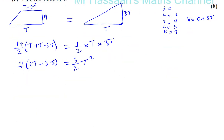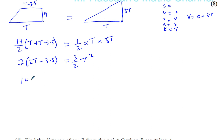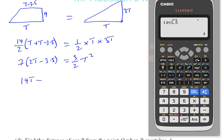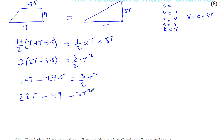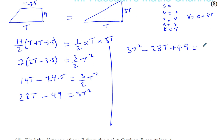So we end up with a quadratic. We have 7 times (2T minus 3.5), which gives 14T minus 24.5, equals (3/2)T squared. Multiplying both sides by 2, we get 28T minus 49 equals 3T squared. Bringing everything to one side: 3T squared minus 28T plus 49 equals 0.